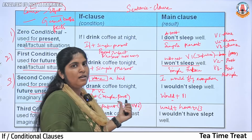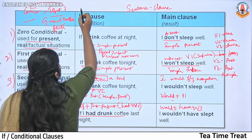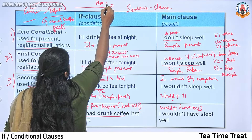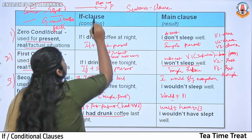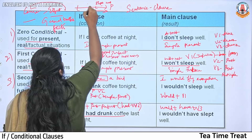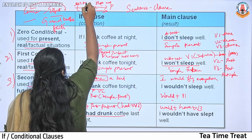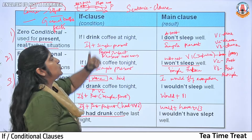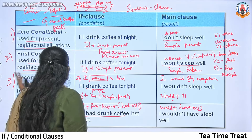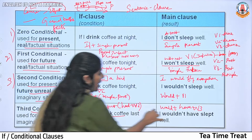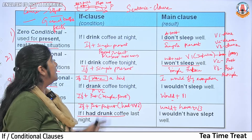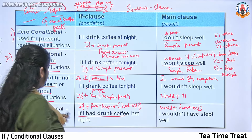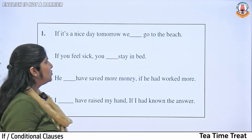But actually I slept well throughout the night, because I didn't drink coffee. So this is a past imaginary situation. The structure uses past perfect in the if-clause and would have + V3 in the result clause. You need to remember these conditional sentences.